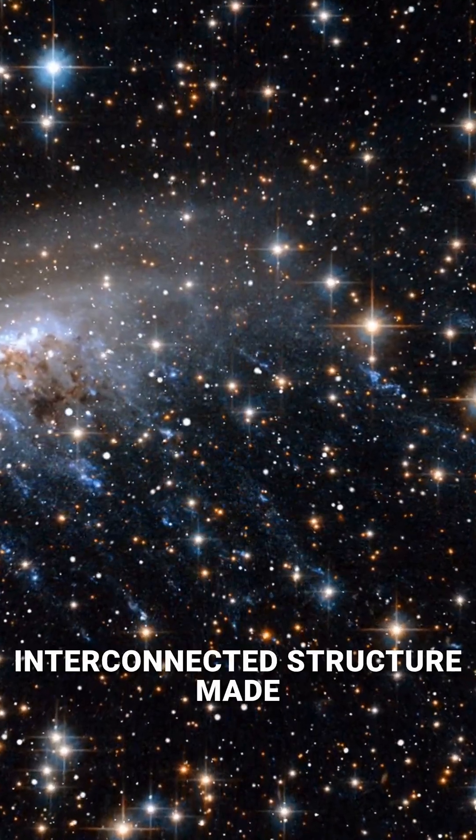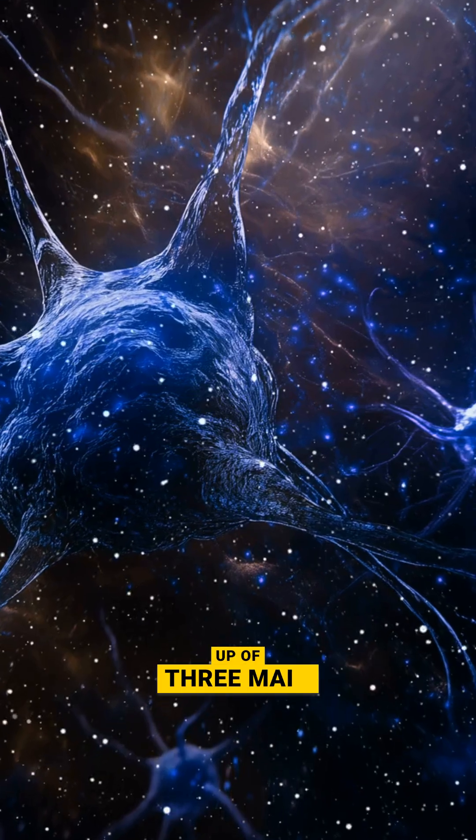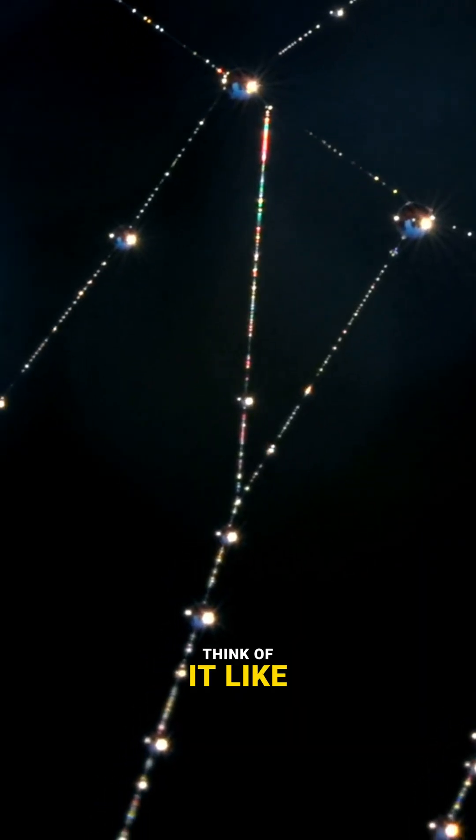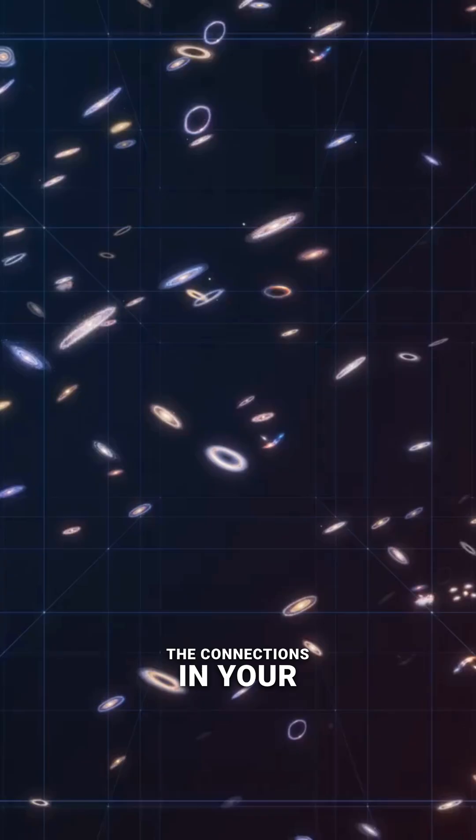Imagine a vast, interconnected structure made up of three main parts—filaments, nodes, and voids. Think of it like a spider web or the connections in your brain.